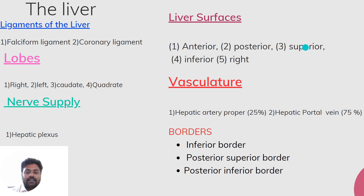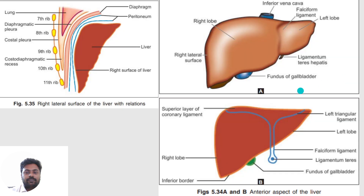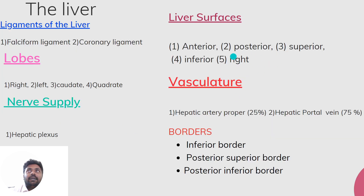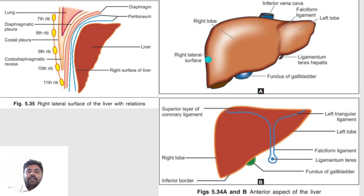The superior surface of the liver is convex on both the left and right sides. The right surface, also called the right lateral surface, is convex on all sides and quadrangular in shape. It is covered with peritoneum.